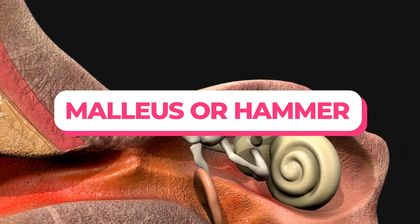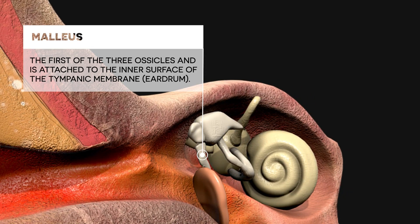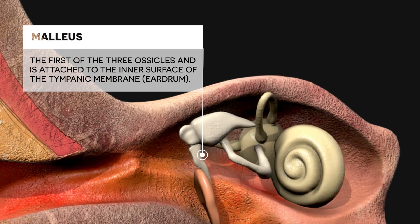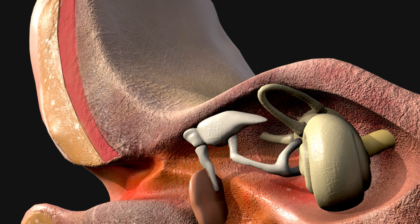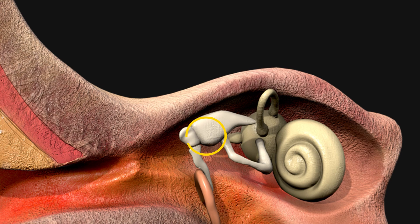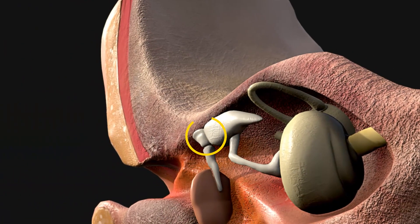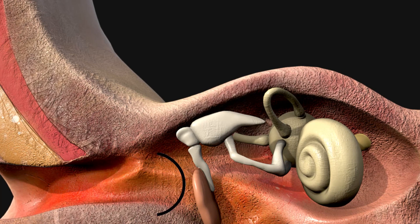The malleus, or hammer, is the first of the three ossicles and is attached to the inner surface of the tympanic membrane. It resembles a hammer in shape, with a long handle attached to the eardrum and a head that connects to the incus. When sound waves cause the eardrum to vibrate, these vibrations are transferred to the malleus.